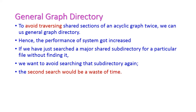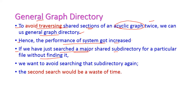The last level is the general graph directory, introduced to avoid traversing the shared section of an acyclic graph twice. By using the general graph directory, system performance is greatly increased since there is no need to search the same subdirectory twice. If a shared subdirectory was already searched and not found, searching it again would be a waste of time. The general graph directory overcomes this drawback by ensuring each subdirectory is searched only once.